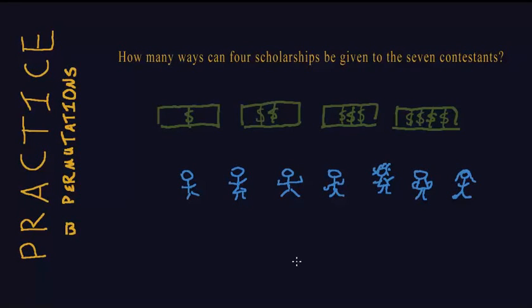Let's apply our knowledge of permutations to some real-world examples. Suppose that there are seven contestants competing for four different scholarships. How many ways can the scholarship office give out these scholarships?